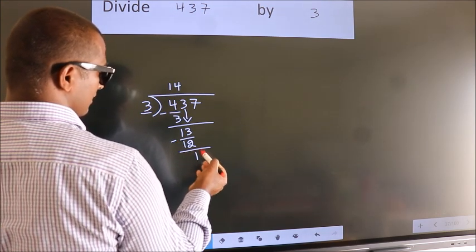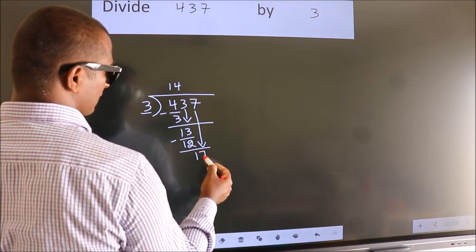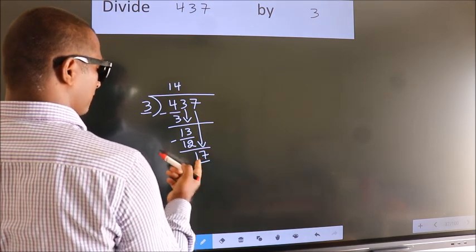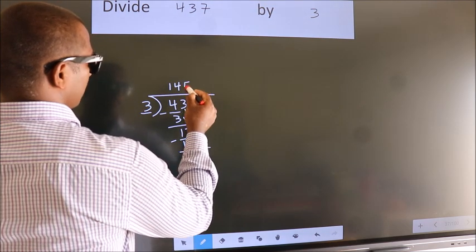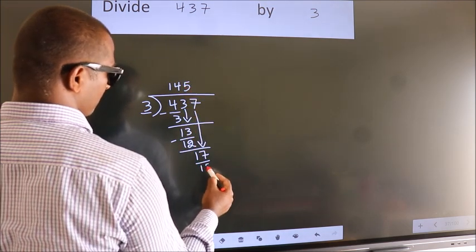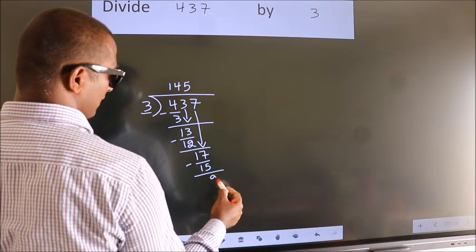After this, bring down the beside number. So 7 down. So 17. A number close to 17 in 3 table is 3 5s 15. Now we subtract. We get 2.